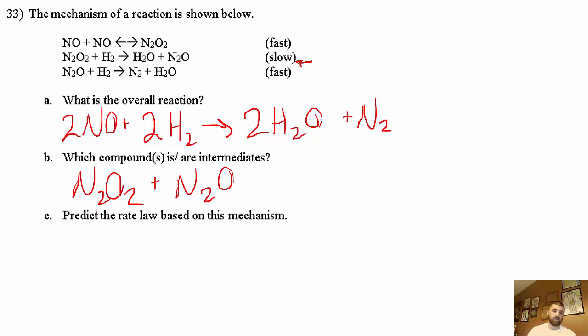Now the more tricky part: predict the rate law based on this mechanism. Because the slow step is the rate determining step, we know that the rate for the whole reaction is going to be R equals K N2O2 times H2. But again, N2O2 is an intermediate, so we have to solve for N2O2 in terms of a reactant that's not an intermediate.